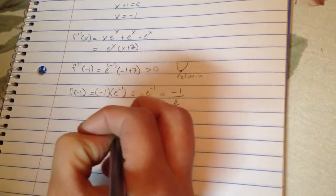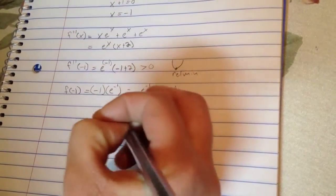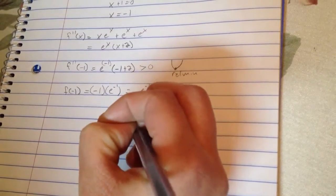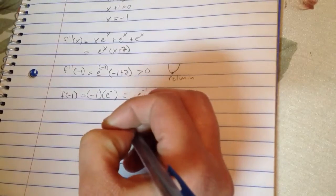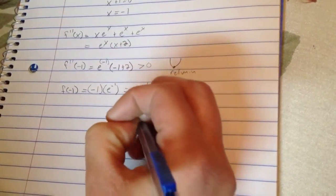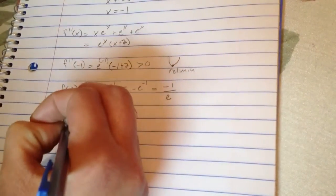So, our point is actually at negative 1, negative 1 over e. And this is our relative min.